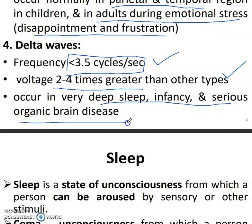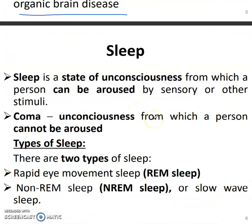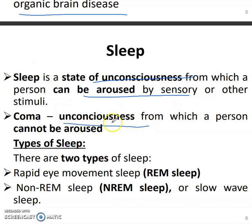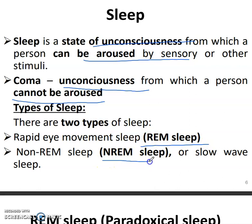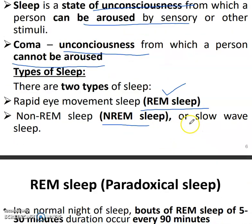Sleep is a state of unconsciousness from which a person can be aroused by sensory or other stimuli. Coma is unconsciousness from which a person cannot be aroused. There are two types of sleep: REM sleep and non-REM sleep. REM means rapid eye movement, and non-REM sleep is the slow wave sleep.